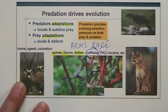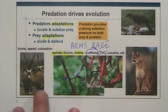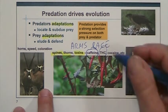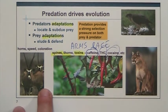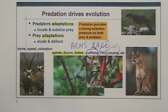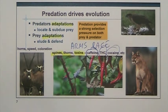THC from marijuana — same thing, that's produced by cannabis plants as a way to defend themselves from predators. A herbivore that eats the plant and gets high is going to be a dead herbivore, because it's going to be easy prey. Cocaine — the same thing, that's also a compound produced by plants to avoid their herbivores. Imagine a herbivore high on cocaine, basically totally unaware of what's happening around it and easy prey for predators.